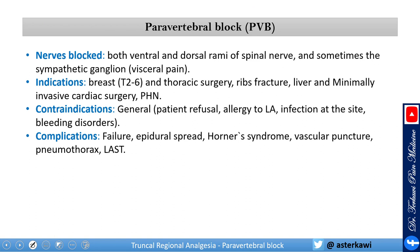What nerves are we blocking here? We are blocking everything: the ventral and dorsal rami of the spinal nerve, and sometimes the sympathetic ganglion depending on how the medication spreads — which gives you visceral pain relief. Indications include breast surgery (aim for T2 to T6), thoracic surgery, rib fracture, liver procedures, minimally invasive cardiac surgery, and post-herpetic neuralgia. Post-herpetic neuralgia is one of the common indications in chronic pain, especially when the rash extends all the way to the spine.